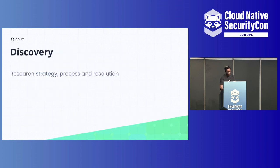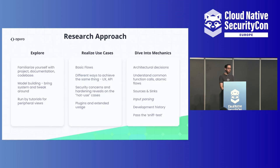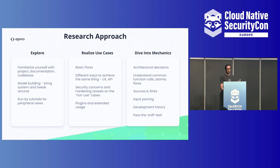So let's discuss the discovery itself. The research strategy has some basics researchers can agree on. I split it into three phases for convenience. We start with an exploration phase — skimming through and understanding the ecosystem and the code base. I'm not a developer of Argo CD, so I have to explore, understand the ecosystem, and go through documentation to get insights about how development occurs.